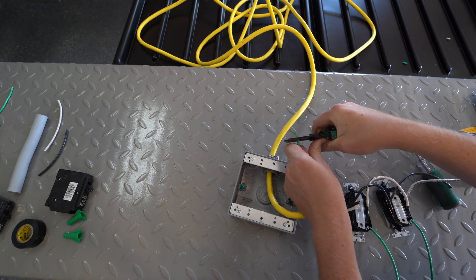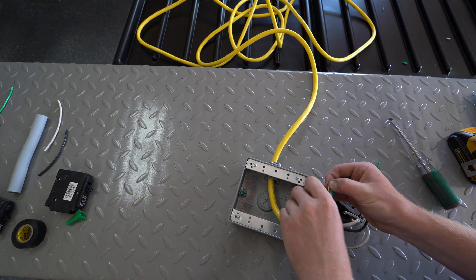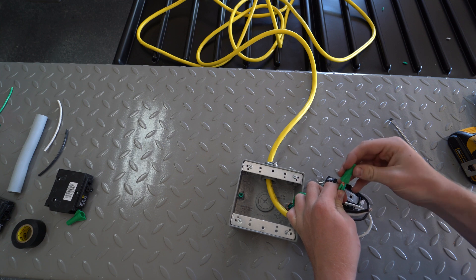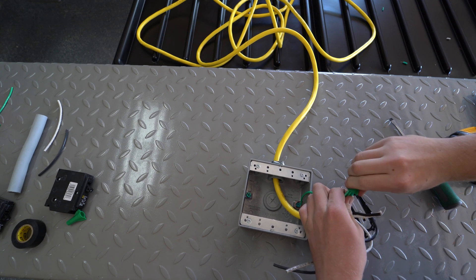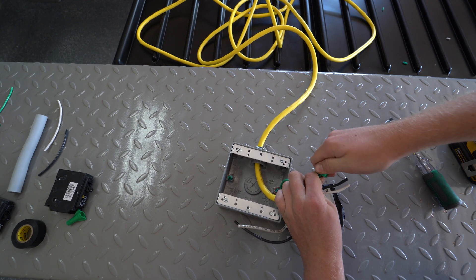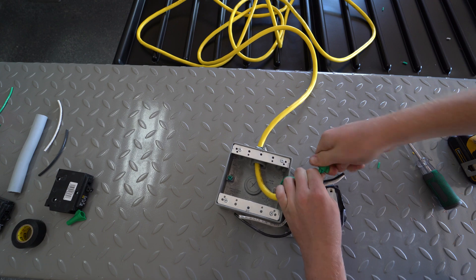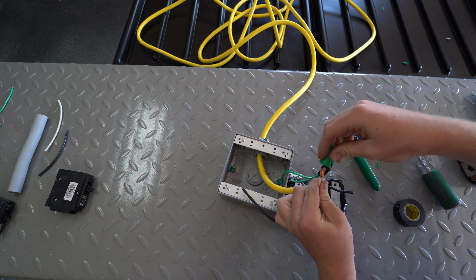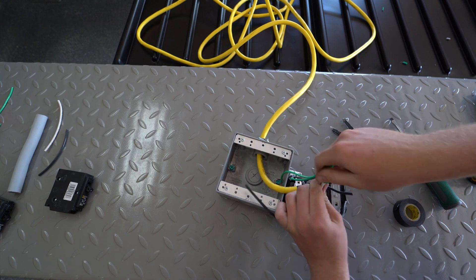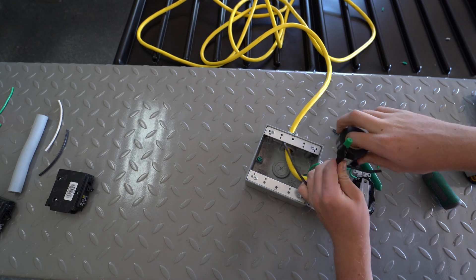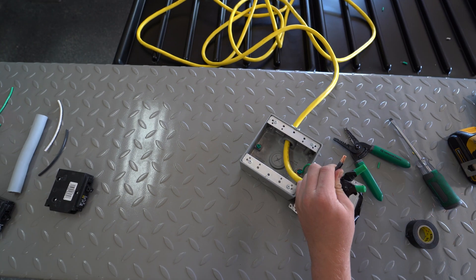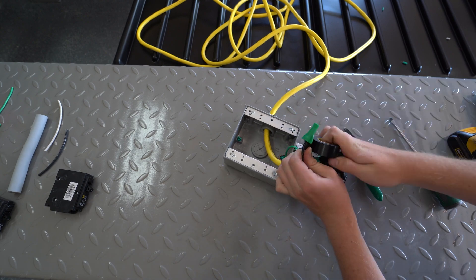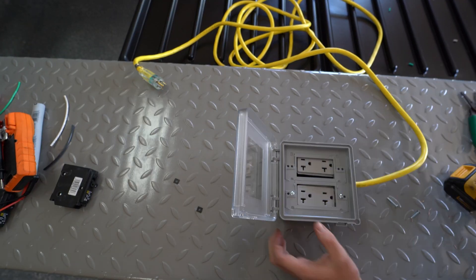Strip the three wires coming from the extension cord. Use a wire nut to connect all the ground connections. Use electrical tape on the wire nut. Strip the white wire coming from the outlet and connect it to the white wire from the extension cord. Repeat the same with the black wire. Now position the two outlets and put the cover plate on.